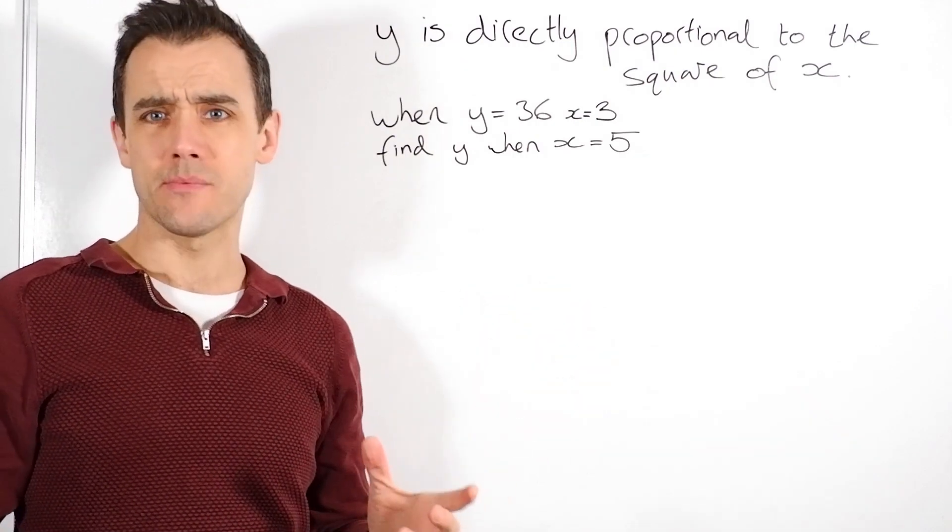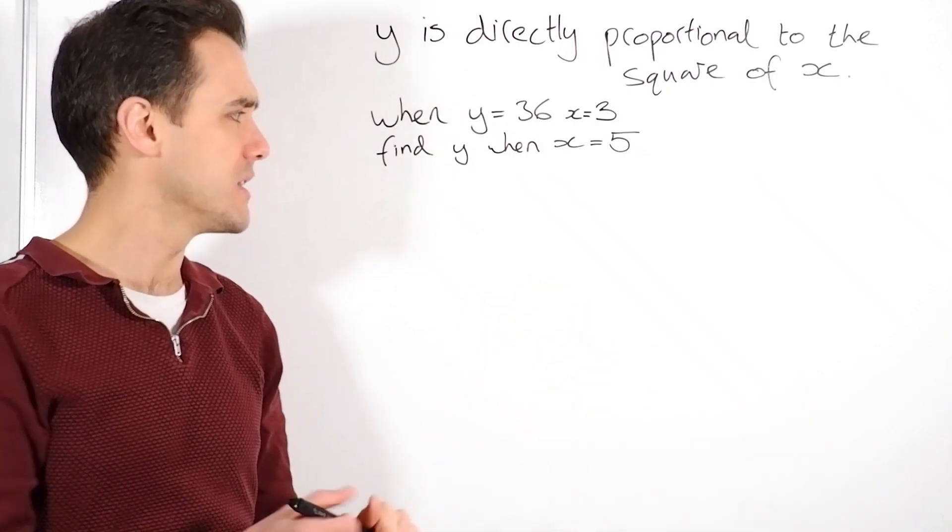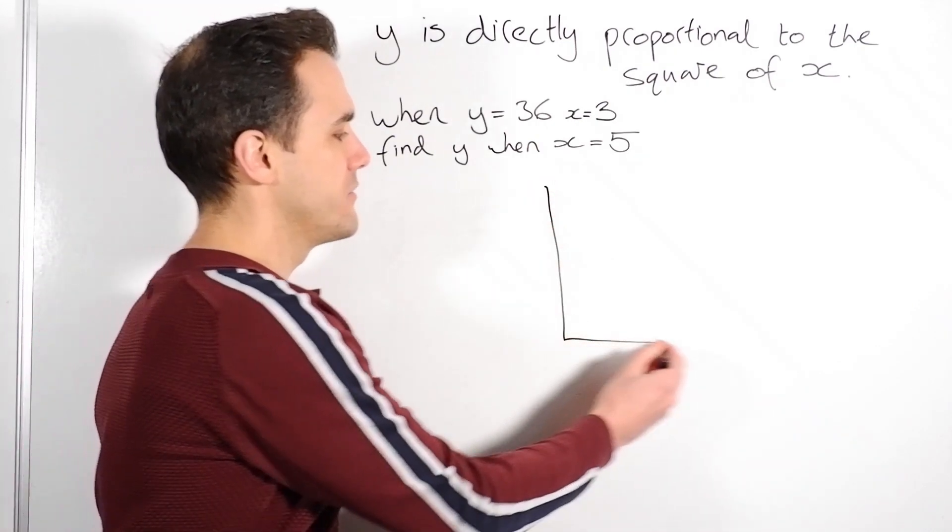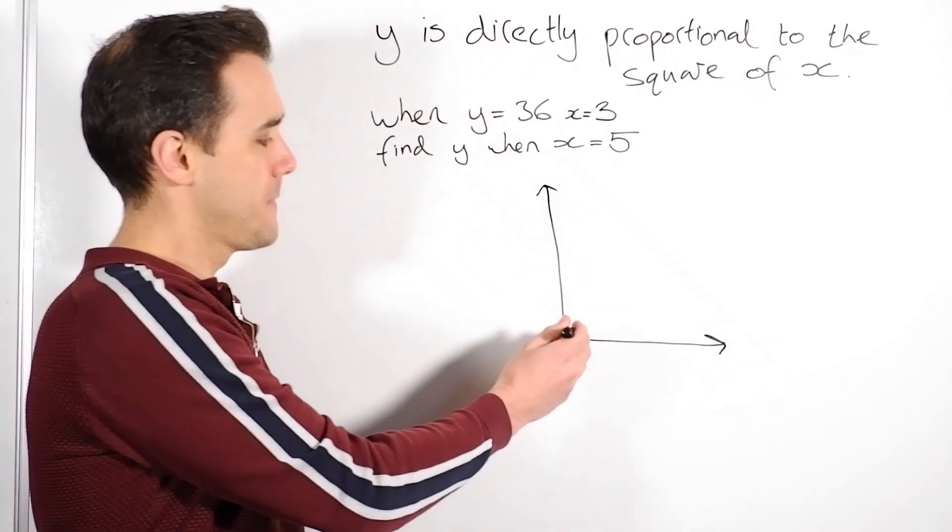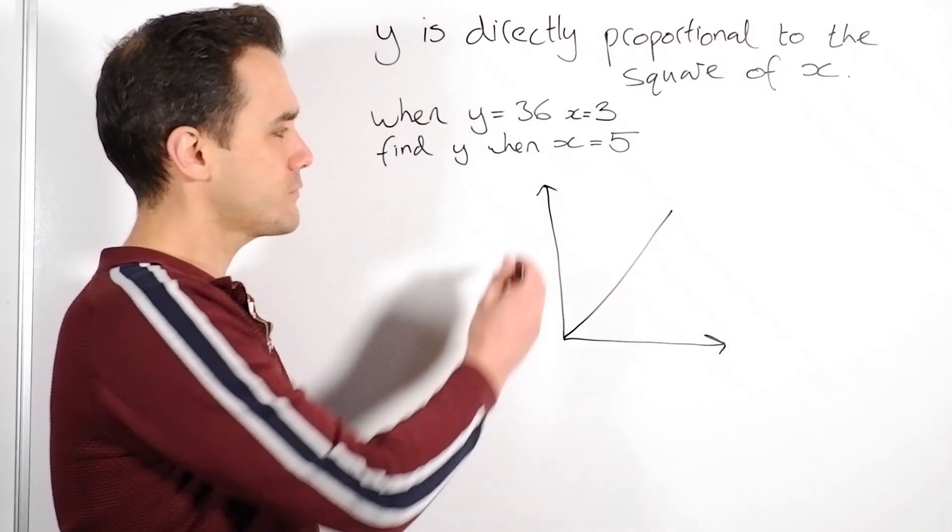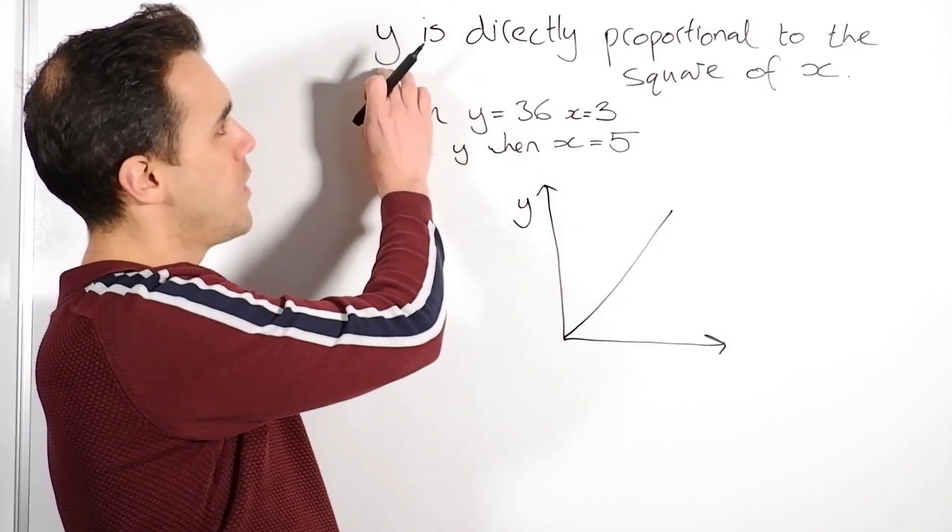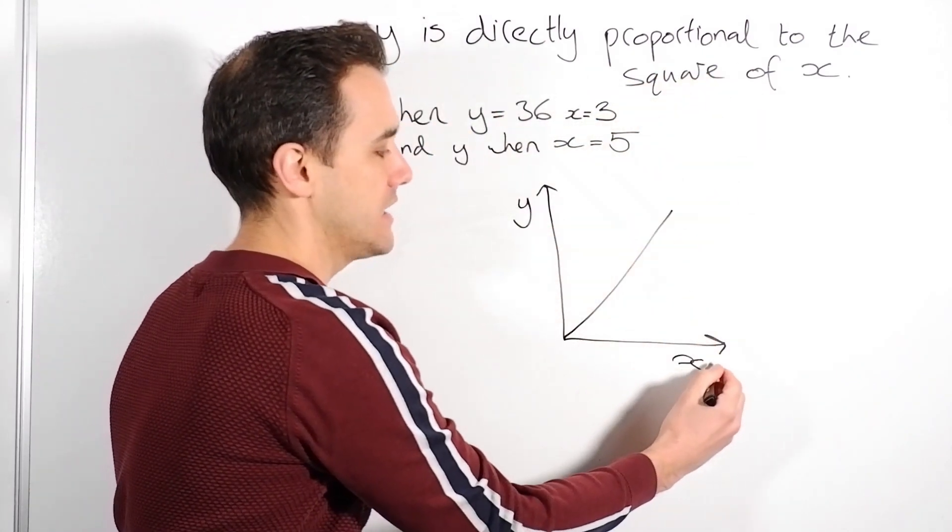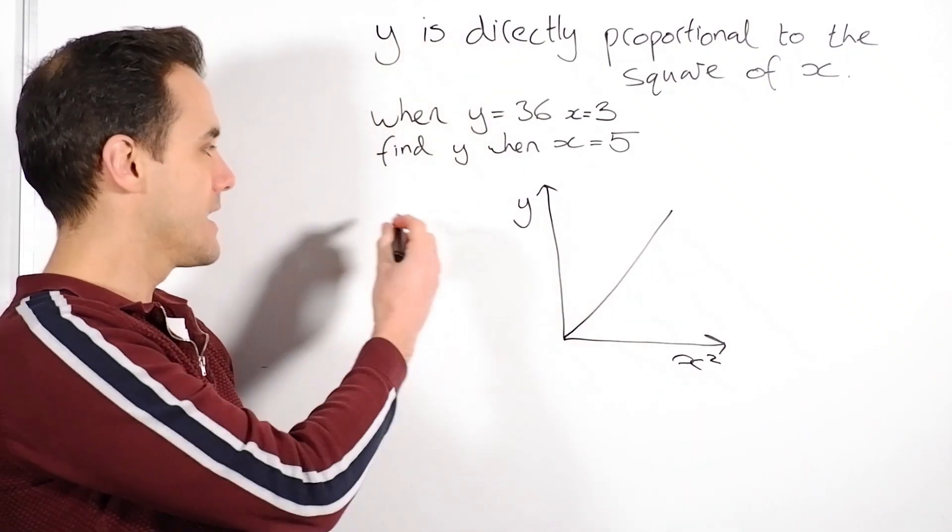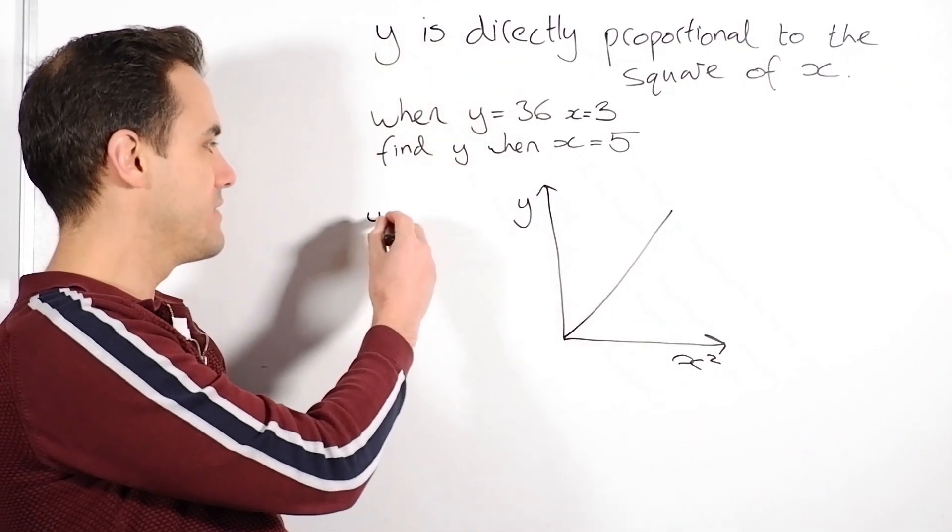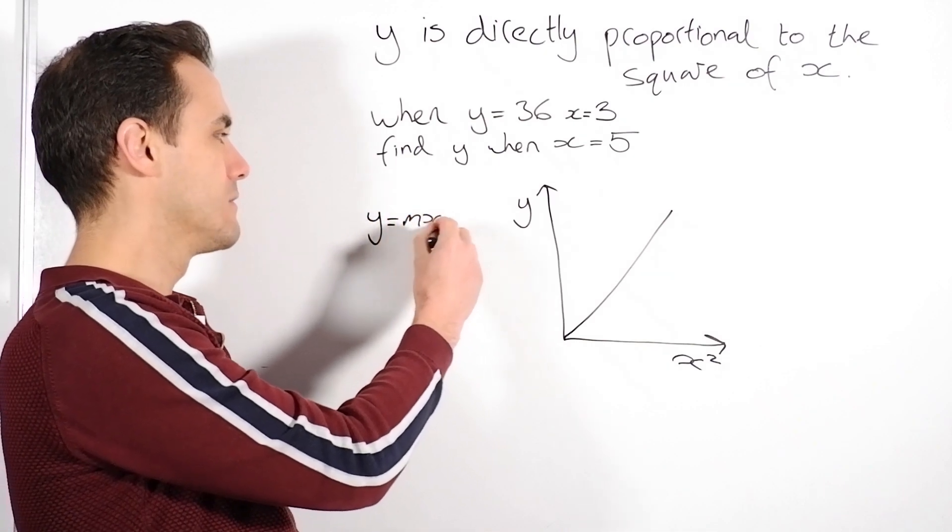So I just want to do a little bit of a recap of graphs before we start this. Some of you may know that when we talk about directly proportional in terms of a graph, it means a straight line through the origin. So that would mean if I plotted my y against my square of x, against my x squared, I'd have got a straight line through the origin.